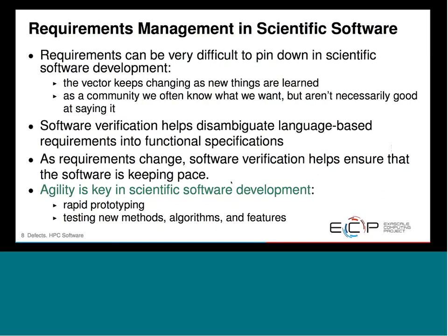One of the most common problem areas in scientific software development is requirements. Requirements management is really difficult because they're very difficult to pin down — our vector often changes as we learn new things. We start with one model, run some problems, and realize that model isn't sufficient or isn't addressing physical phenomena we need to investigate. We're constantly changing our vector. As a community, we're usually pretty good at knowing what we want but really not very good at saying it or communicating it well.